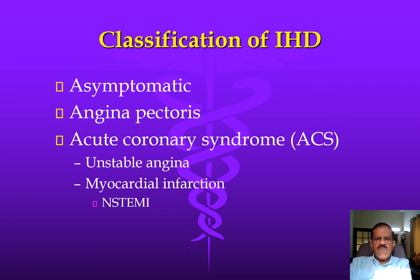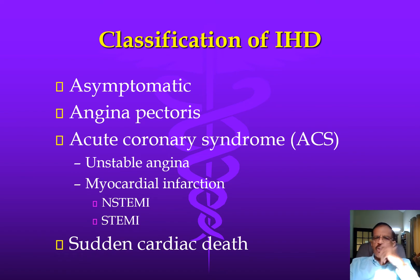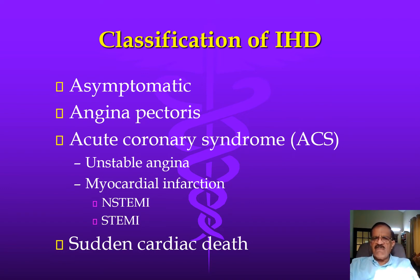In myocardial infarction we have two types: non-ST segment elevation myocardial infarction and ST segment elevation myocardial infarction. We will discuss these conditions in much more detail later. And then there is sudden cardiac death — somebody may just die suddenly and autopsy might show cardiac death. So sudden cardiac death may also be a manifestation of coronary artery disease.